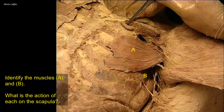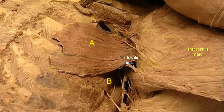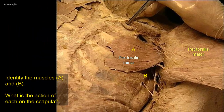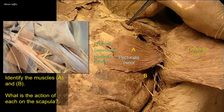Identify the muscles A and B. What is the action of each on the scapula? Muscle A is pectoralis minor. It is a small triangular muscle that is largely covered by pectoralis major, which is reflected away in this dissection. The muscle stabilizes the scapula and can pull it forwards against the thoracic wall — what we call protraction of the scapula. The muscle has a rather unimportant function that can be replaced by other muscles, but should be remembered as a landmark in the axillary region, as it is used to divide the axillary artery into three parts for descriptive purposes.